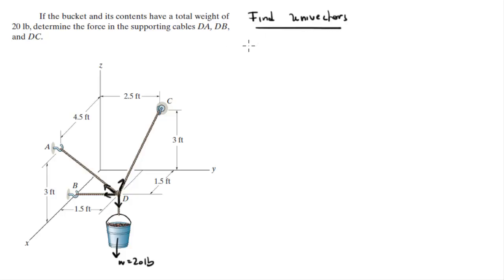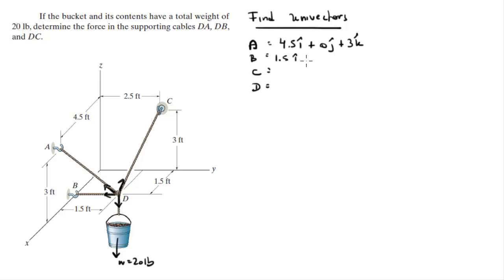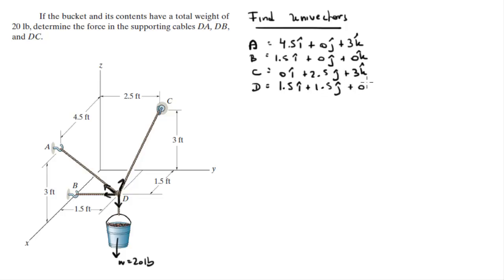So to do that, let's find the points involved. The points involved are A, B, C, and D. Point A sits at 4.5i + 0j + 3k. Point B sits at 1.5i + 0j + 0k. And D sits at 1.5i + 1.5j + 0k.